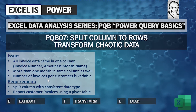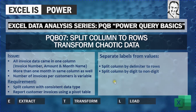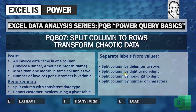The requirement is to split the column with consistent data types and report customer invoicing using a pivot table. In this video we'll see how to separate labels from values, use split column by delimiter to rows, split by digit to non-digit, split by non-digit to digit, and split column by number of characters.